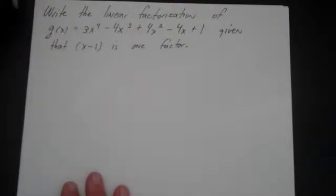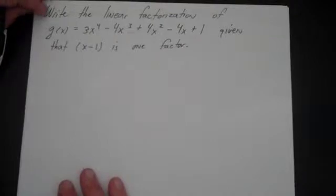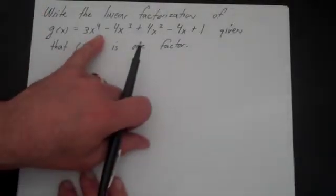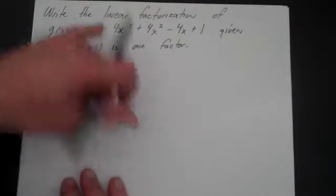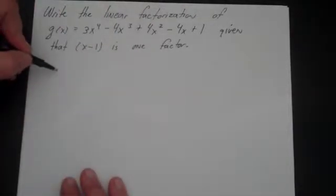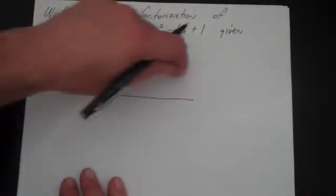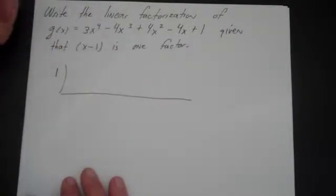Sometimes the problem states 'given that 1 is a zero,' and it would mean the same thing. The very first thing I'm going to do is take this factor and divide it into this polynomial, and then with what's remaining I'm going to factor by hand. I'm going to use synthetic division — I think it's a little bit easier — so I'm going to put a 1 out here. Remember that changes signs, and I'm going to put all the coefficients up here, but not the variables. If there's one missing I'll put a 0 there.